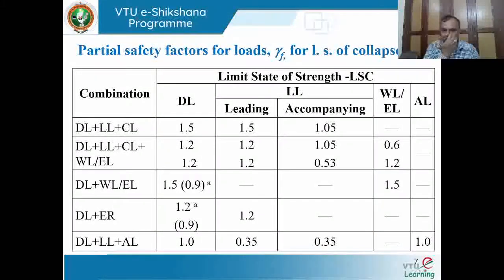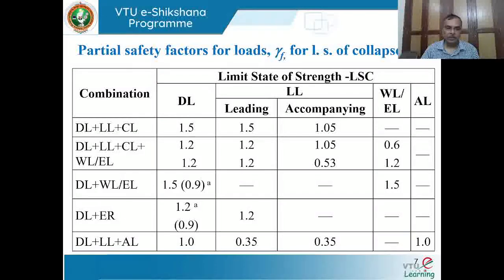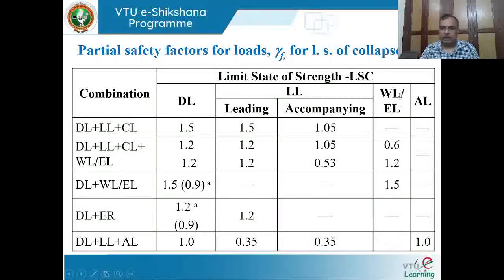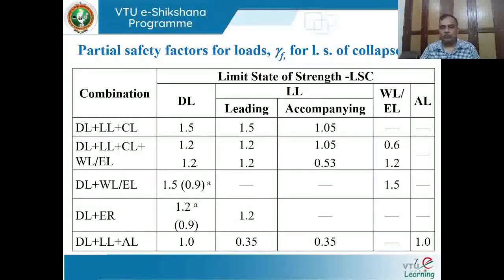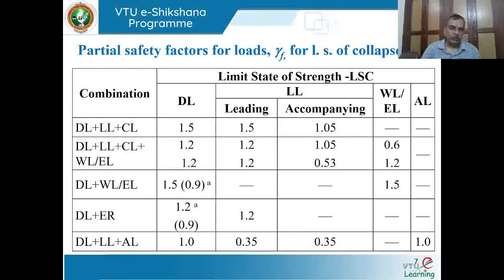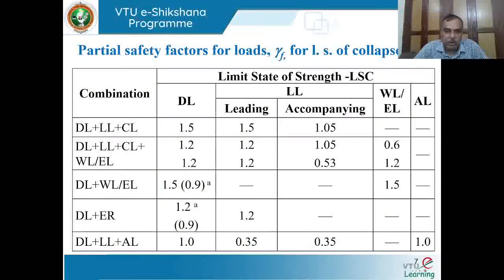For the combination of dead load and wind or earthquake load only: the dead load factor is 1.5 and wind or earthquake factor is 1.5 — 50% amplification for both. But when checking stability against overturning, instead of multiplying the characteristic dead load by 1.5, we multiply by 0.9 — considering the working load or slightly less, rather than the ultimate load, for the stability check.